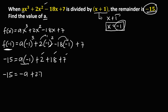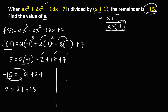To solve for A, transpose negative A to get positive A, and transpose negative 15 to get positive 15. So we have A equals 27 plus 15, that's positive 42. Therefore, A is equal to positive 42.